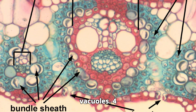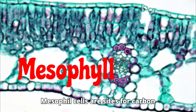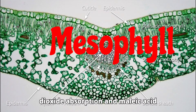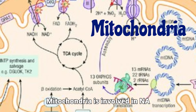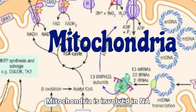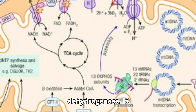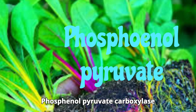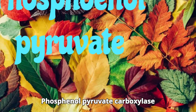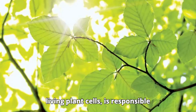Three, bundle sheath cells contain far more chloroplasts, mitochondria, other organelles, and smaller central vacuoles. Four, mesophyll cells are sites for carbon dioxide absorption and malic acid formation. Five, mitochondria is involved, and NADH-dependent malate dehydrogenase is involved.